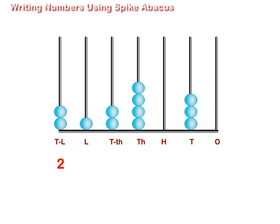1 bead in the spike representing lakhs, 2 beads in the spike representing ten thousands, 4 beads in the spike representing thousands.